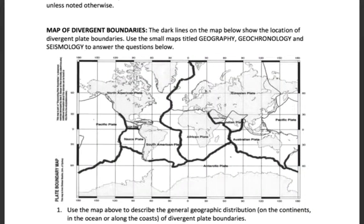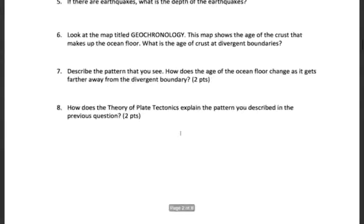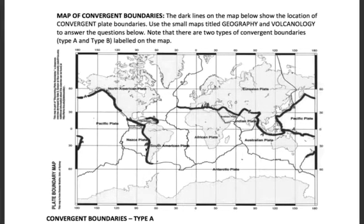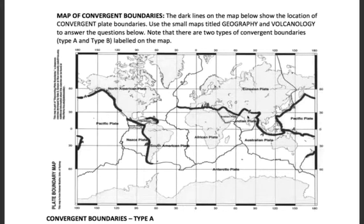That gets you through the part on divergent boundaries. The next part uses a similar map, but now we're looking at convergent boundaries, where the plates are moving towards each other. These thick lines represent convergent boundaries; the thin lines represent other types that we don't need to look at right now. Note that on this map there are two different types: type A boundaries and type B boundaries. We'll mainly focus on the A boundaries — a great example is on the west coast of South America. There are a few questions about B boundaries, so look at that location when answering those. It's the best place in the world where we have an example of a type B convergent boundary.